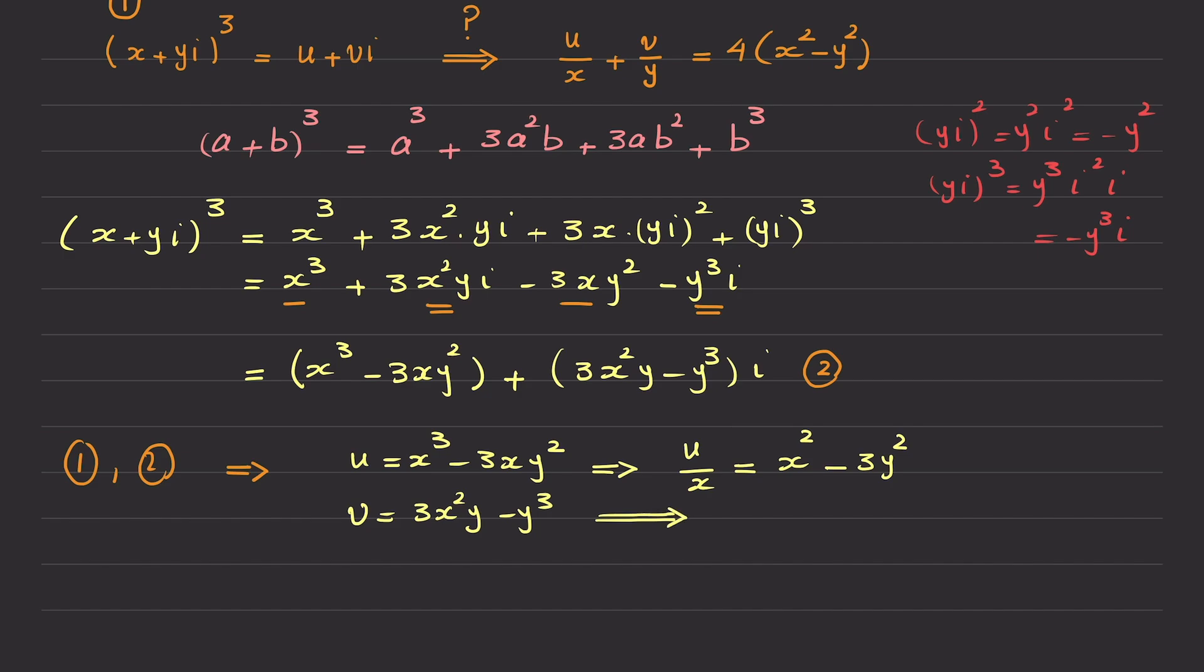But for the second one, motivated by this fraction, I divide both sides by y. So this becomes v over y. On the right hand side, I have two terms to divide by y. The first one will give me simply 3x², and the second one will give me y².